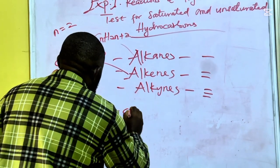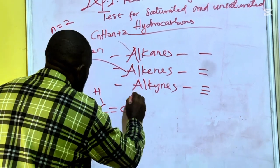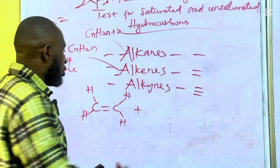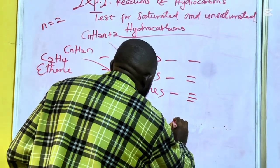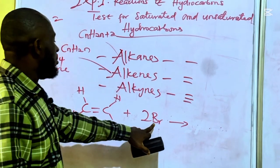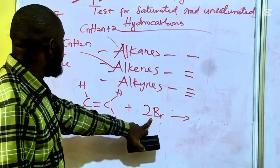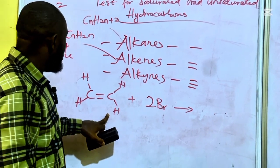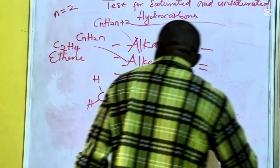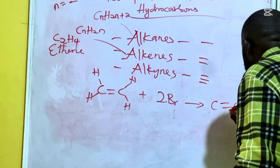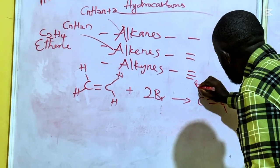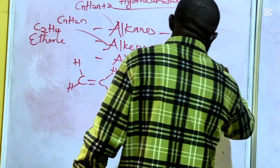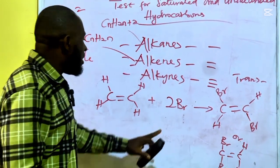If we draw the chemical structure of this compound and perform a substitution reaction with two moles of bromine, the bromine will attach themselves replacing the hydrogen atoms found in this compound. What we get is C double bond C — it can be trans — and this is the product of the substitution reaction.